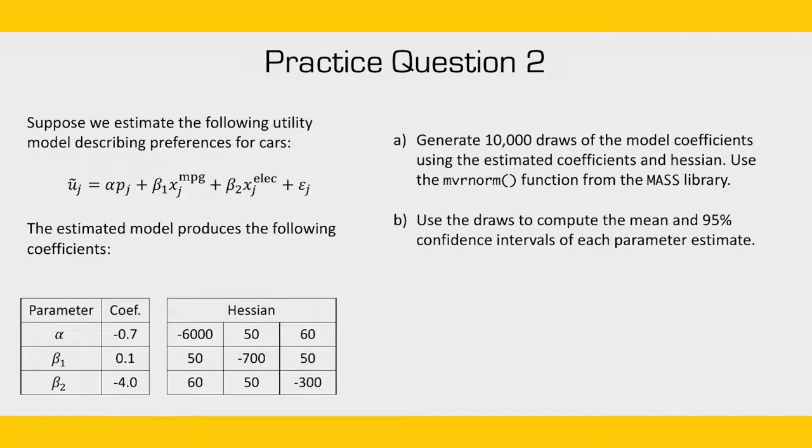And the upper and lower bounds reflect a 95% confidence interval of that estimate. All right, so for our second practice question, let's suppose that we estimated the following utility model for preferences for cars. And we got the following results of these coefficient estimates and this Hessian. Let's use both of those values to generate 10,000 draws of the model coefficients. And then we're going to use those draws to compute the mean and a 95% confidence interval of each parameter estimate.